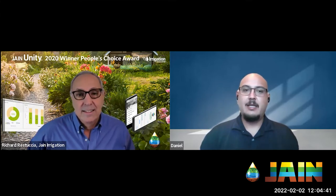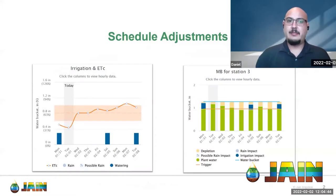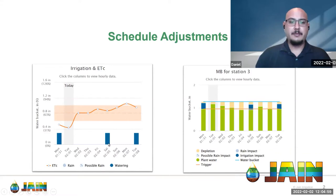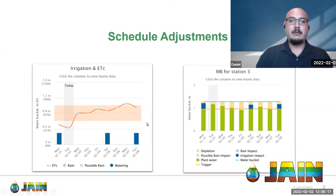There are so many variables that affect how often and the amount of water we can put down, and they all play a significant role. Looking at this schedule adjustments diagram — both showing the same plant materials — the blue bars show when we're watering. The frequency, or days between watering, changes based on ET. As ET rises and we get warmer, hotter, windier days, the higher the ET, the more frequently we need to put water down.